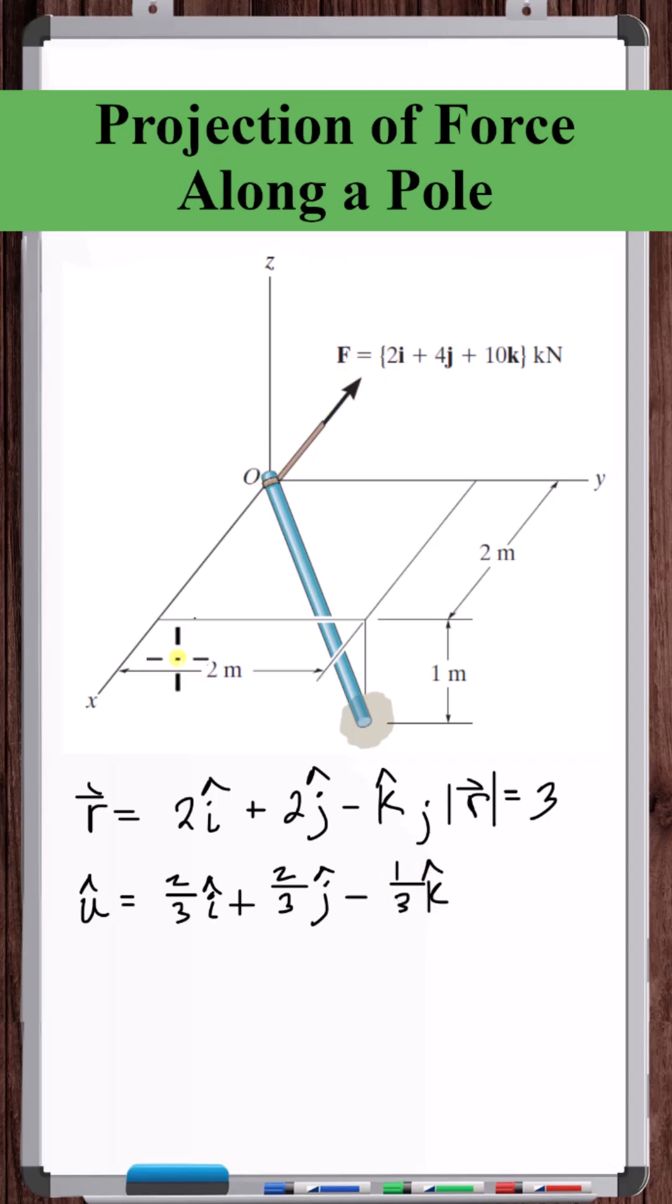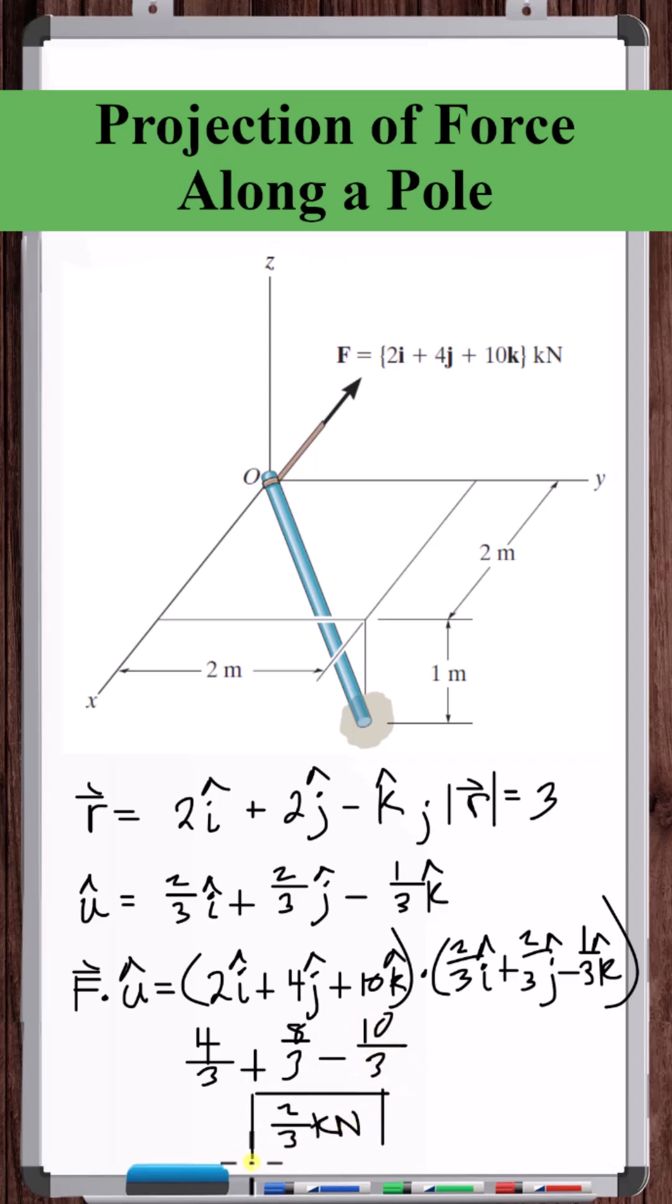Now we just dot the force vector with this unit vector. So four-thirds plus eight-thirds minus ten-thirds. So two-thirds kilonewtons is the magnitude of the projection of this force vector onto the pole.